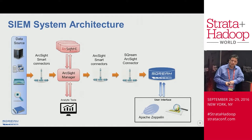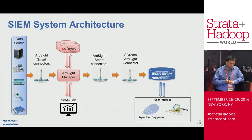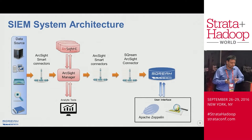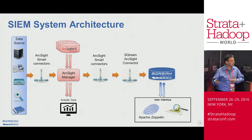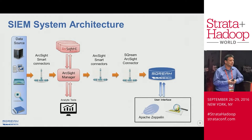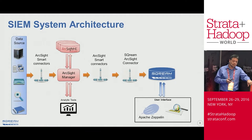This is the general architecture of the system. You can see that the sources of the data are mainly user activities inside the organization, and it's ArcSight that handles all of that. What we did to extend the power of ArcSight was extend the database layer. We used the standard connectivity tool of ArcSight — what they call the smart connector. That was the only integration we did, and it enabled them to work on much larger data sets with the same technology stack they use.